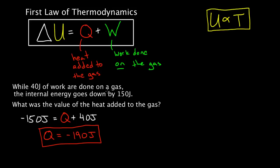Those were a few examples of using the first law. Basically, you've got to be careful with your positive and negative signs. Remember: Q is the heat added to the gas, W is the work done on the gas, and delta U is the change in internal energy — which also tells you what happens to the temperature.